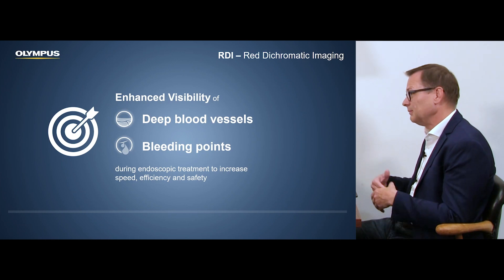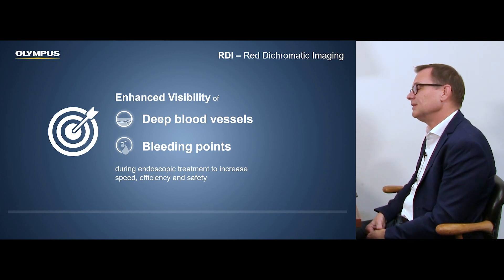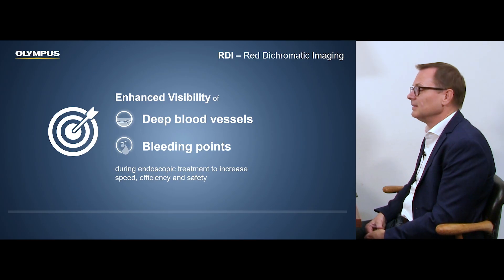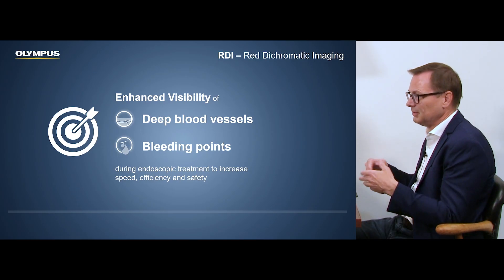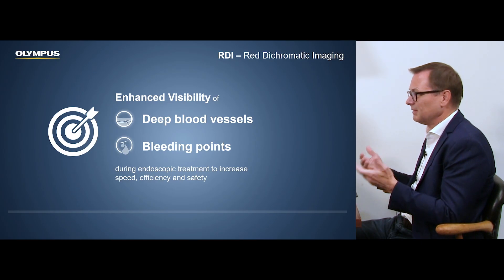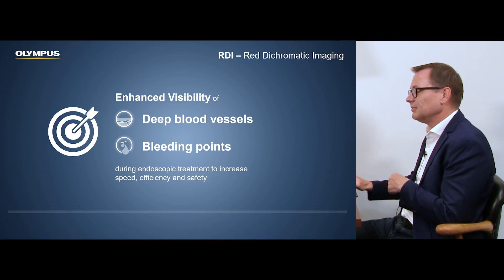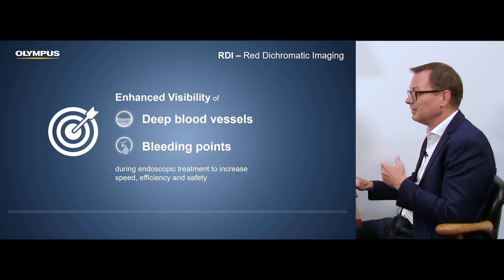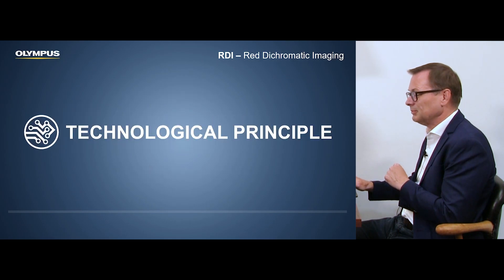You might remember from NBI that NBI uses green and blue light. The difficulty with green and blue light is it does not penetrate so deep into the mucosal tissue, so deeper blood vessels are actually not seen by NBI. This is what we're trying to solve with the RDI function, and it might be interesting to use this on a bleeding spot.